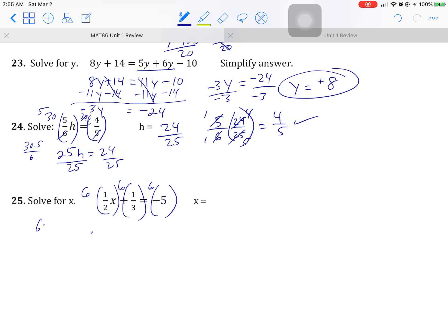That's going to be 6 times 1 over 2, 3X. 6 times 1 over 3 plus 2 and negative 30. X equals negative 32 over 2. Let's check that one.